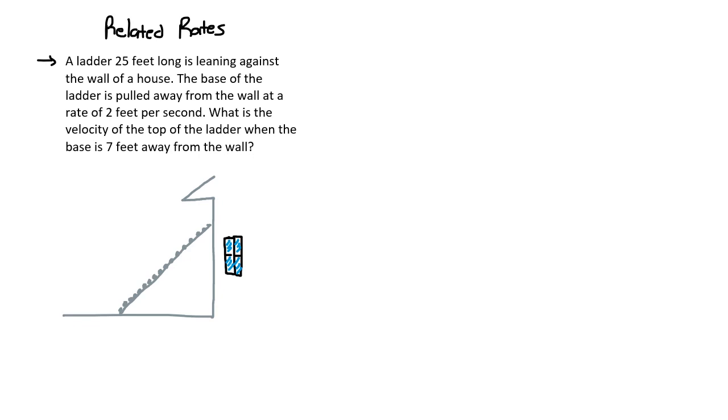Where can we start? Perhaps by giving some names to the dimensions in question. If this ladder is 25 feet long, then you'd be safe in assuming that the distance along this slanted line here is always 25. To say that the base of the ladder is pulled away from the wall at a rate of 2 feet per second is to say that this little thing here is moving this way at a certain rate, a rate of 2 feet per second.